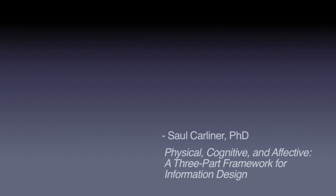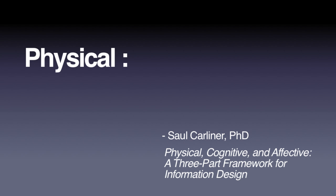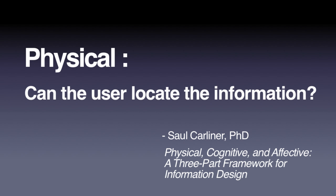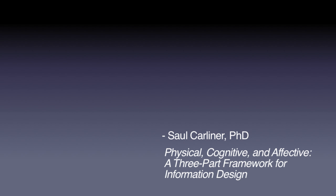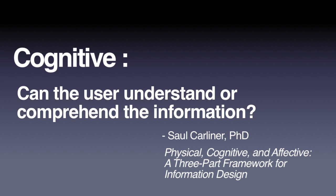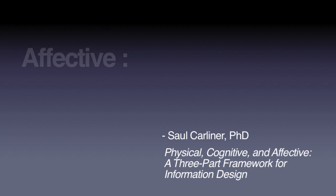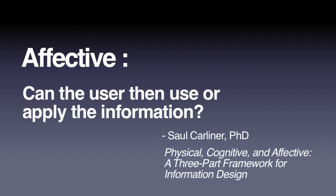Information design is founded on principles. According to Saul Carliner's article 'Physical, Cognitive, and Affective: A Three-Part Framework for Information Design,' these principles work because they address three human needs. First, the physical: can the user locate the information they want or need? Next is the cognitive: can the user understand or comprehend the information once they've found it? And finally, the affective: can the user then use or apply the information to meet their needs?